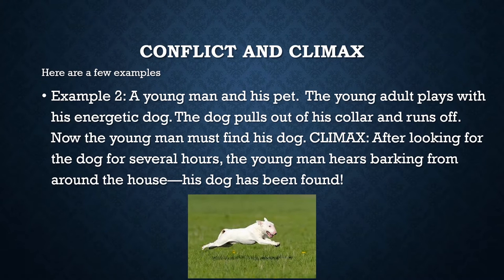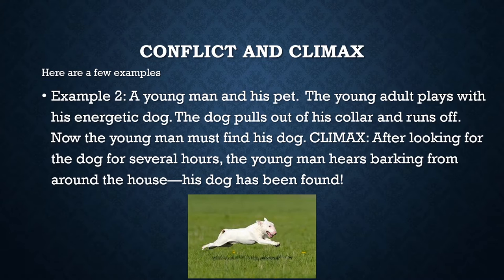The second example focuses on a young man and his pet. The young adult plays with his energetic dog, the dog pulls out of his collar and runs off, and now the young man must find his dog. After looking for hours — maybe even posting on social media or making posters — the young man hears barking from around the house. His dog has been found. Do you think he buys a different collar, only plays in a fenced-in yard, or decides they only play indoors? You notice the climax forces the protagonist to make a decision that will impact the future.